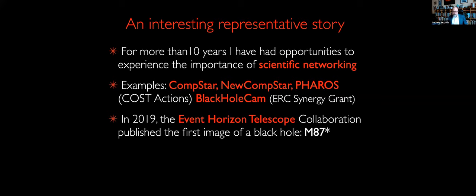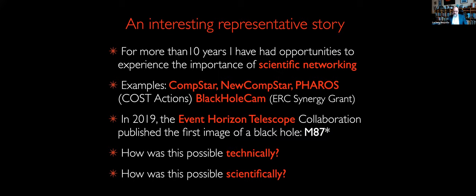So what I want to present is what the Event Horizon Telescope collaboration has published in 2019. It is the first image of a black hole, M87. And there is no way I can possibly explain this in any detail, but I'll try to give you at least a glimpse of how this was possible technically and why it is actually possible through networking.